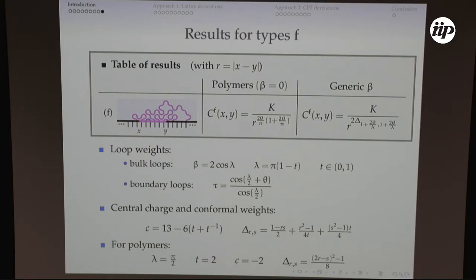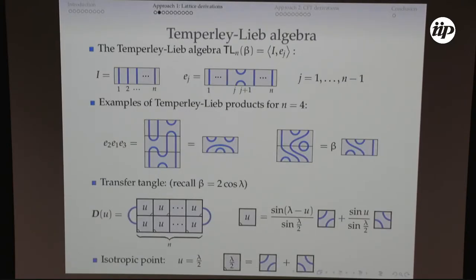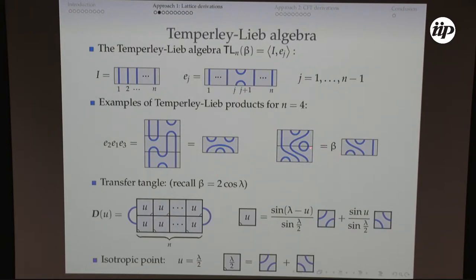Now I want to tell you how I obtain these results, starting with the lattice approach. The first tool is the Temperley-Lieb algebra and the transfer operator in this algebra. It's an algebra of diagrams: the identity element and the E_J elements. To multiply these elements, I stack them and pull the strings — for example, E2 E1 E3 gives a new diagram. More generally, when multiplying two elements, I stack them, pull the strings, and include a factor of beta whenever I have a closed loop. The transfer matrix I use is actually a transfer tangle, an element of the algebra with two rows, written in terms of face operators with a spectral parameter U.